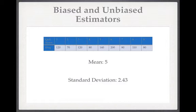What you'd find is that those means cluster around 5 — which is expected, since the population mean is 5. However, the standard deviations of your samples cluster around 1.9, not 2.43 as you might expect. This is slightly surprising and brings us to the concept of biased and unbiased estimators.